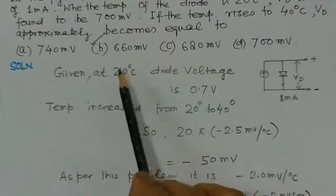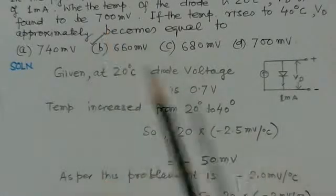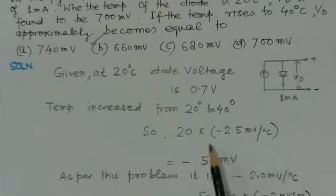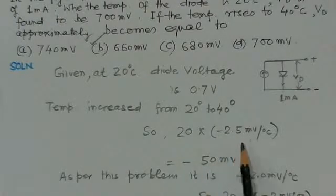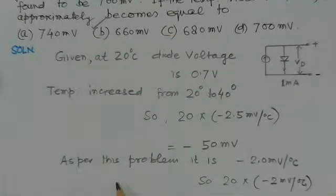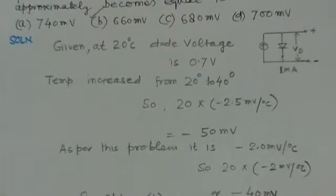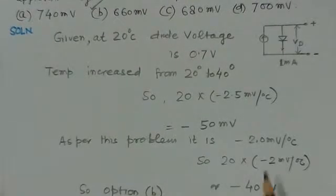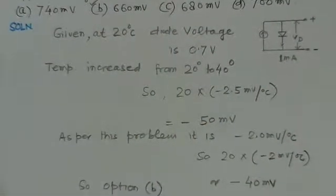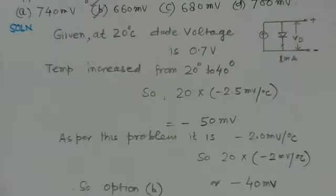However, subtracting 50 millivolts from 700 millivolts, no option matches. So instead, we take the voltage decrease as 2 millivolts per degree centigrade rather than 2.5. Using this, the change is 20 × 2 = 40 millivolts. Subtracting 40 millivolts from 700 millivolts gives 660 millivolts. Therefore, option B is the correct choice here.